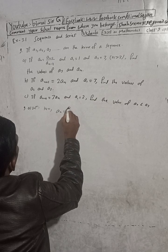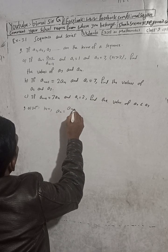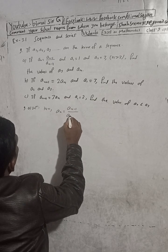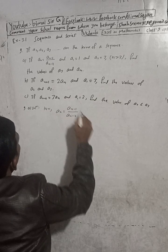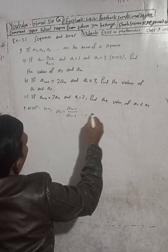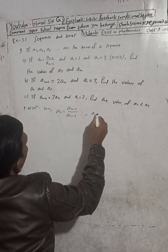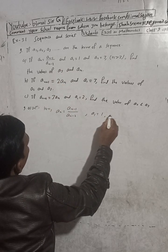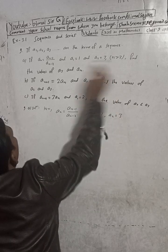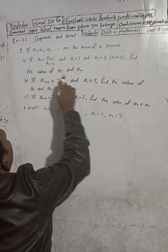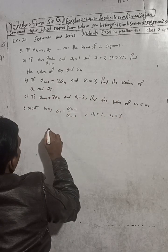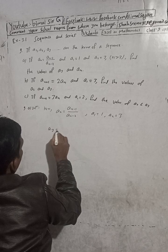Solution: a_n is equal to a_(n-1) divided by a_(n-2). Here a1 is equal to 1, a2 is equal to 3. We need to find the value of a3. To find a3, I'll put n equal to 3.